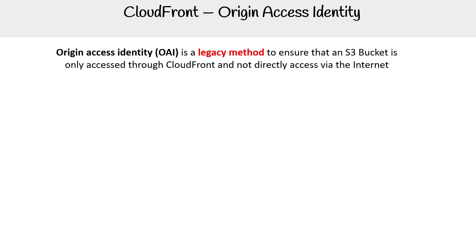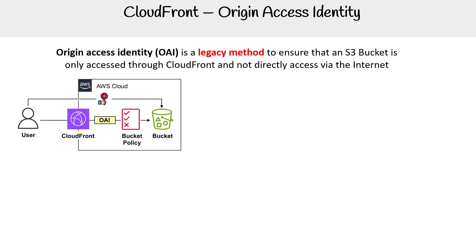Origin Access Identity is a legacy method to ensure that an S3 bucket is only accessed through CloudFront and not directly via the internet. Here is our diagram. The idea is that if we were trying to access the bucket — let's say it's a static website with a static website endpoint — we should not be able to reach it directly.